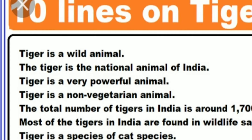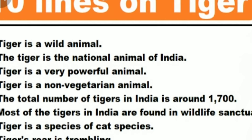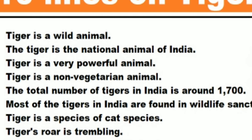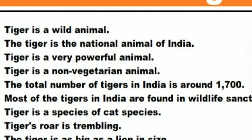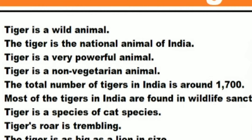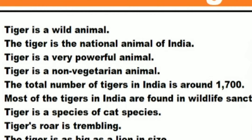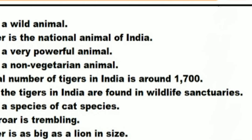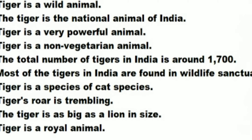The tiger is a wild animal. The tiger is the national animal of India. The tiger is a very powerful animal. The tiger is a non-vegetarian animal. The total number of tigers in India is around 1700. Most of the tigers in India are found in wildlife sanctuaries.